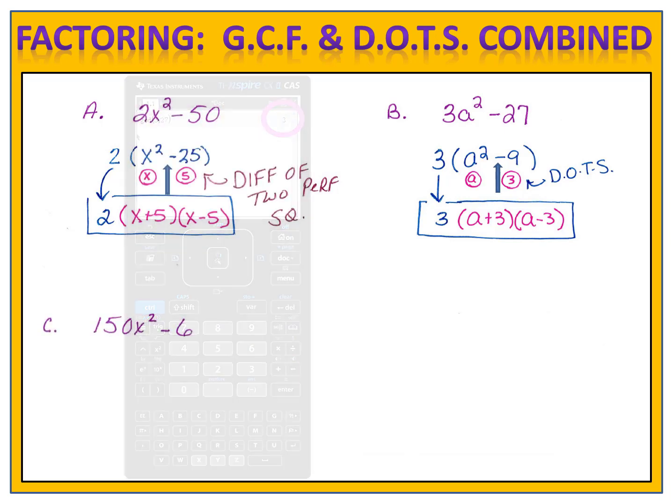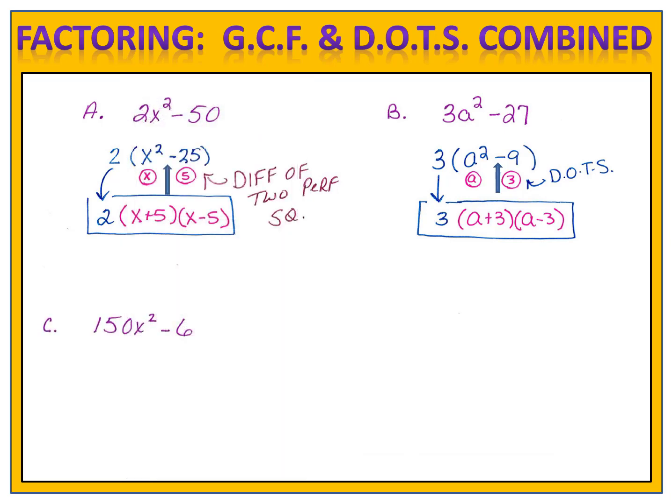Now let's try a couple more examples. And I'll use some numbers that are larger, so perhaps you might want to experiment using your graphing calculator in order to find the greatest common factor. Or perhaps you want to do it by hand. Can you factor 150x squared minus 6? Please pause the video here, and see if you can factor completely this binomial.